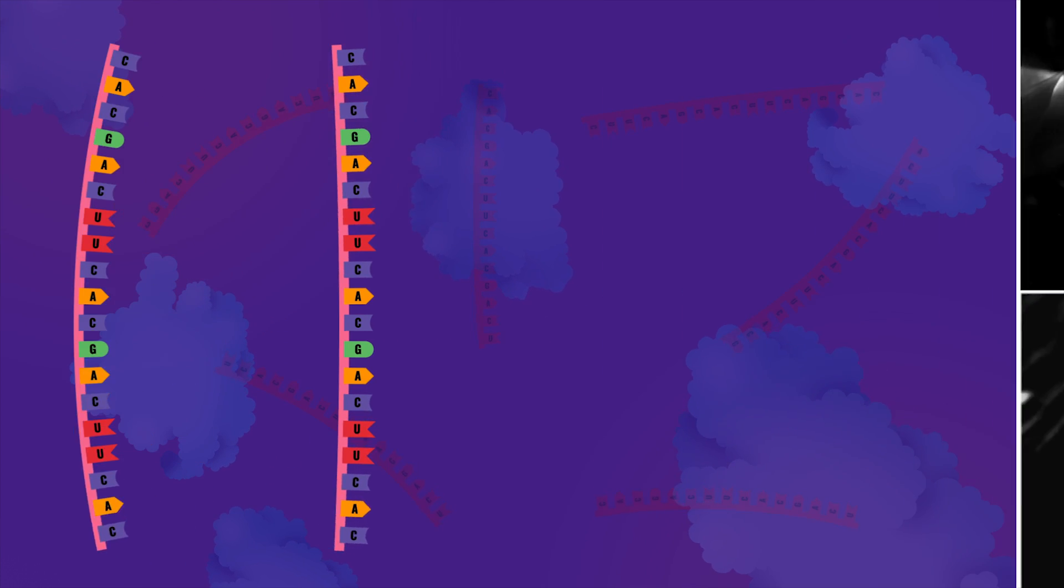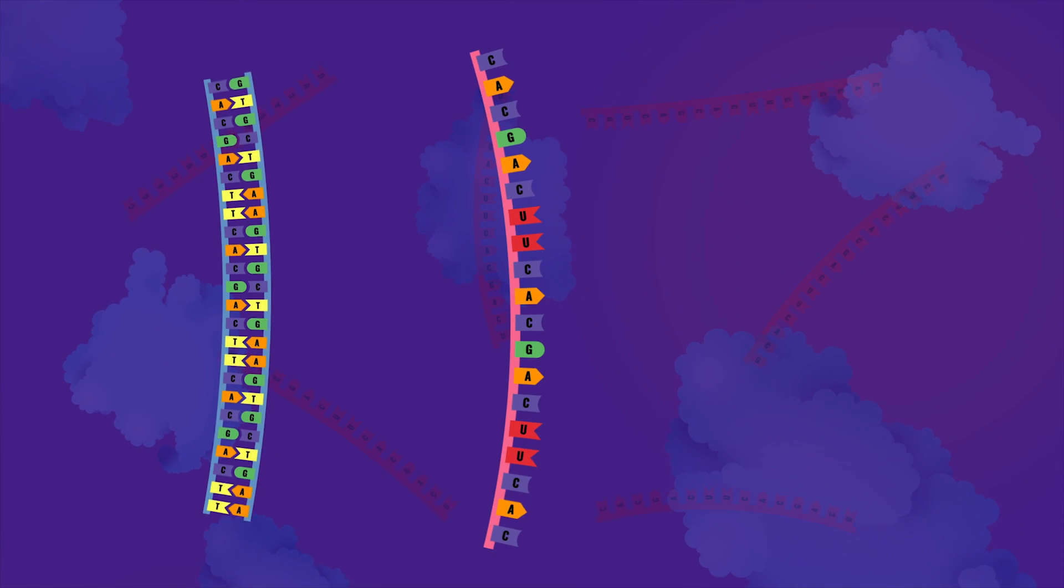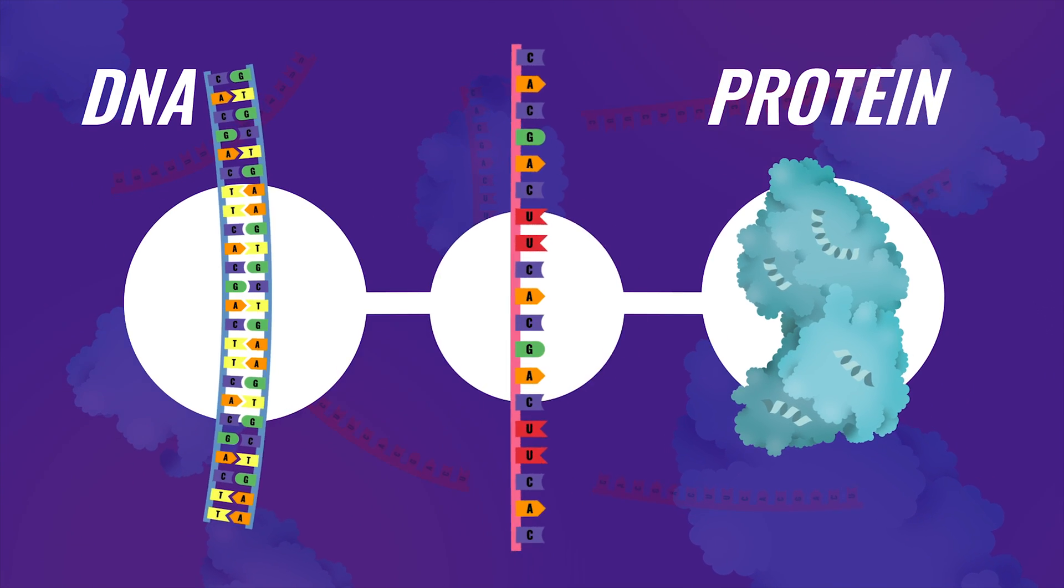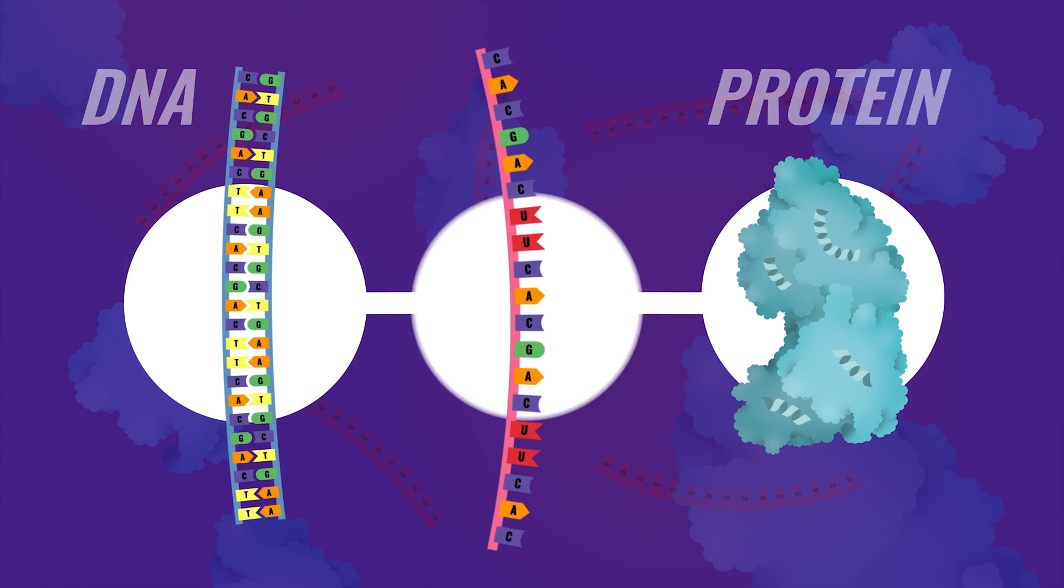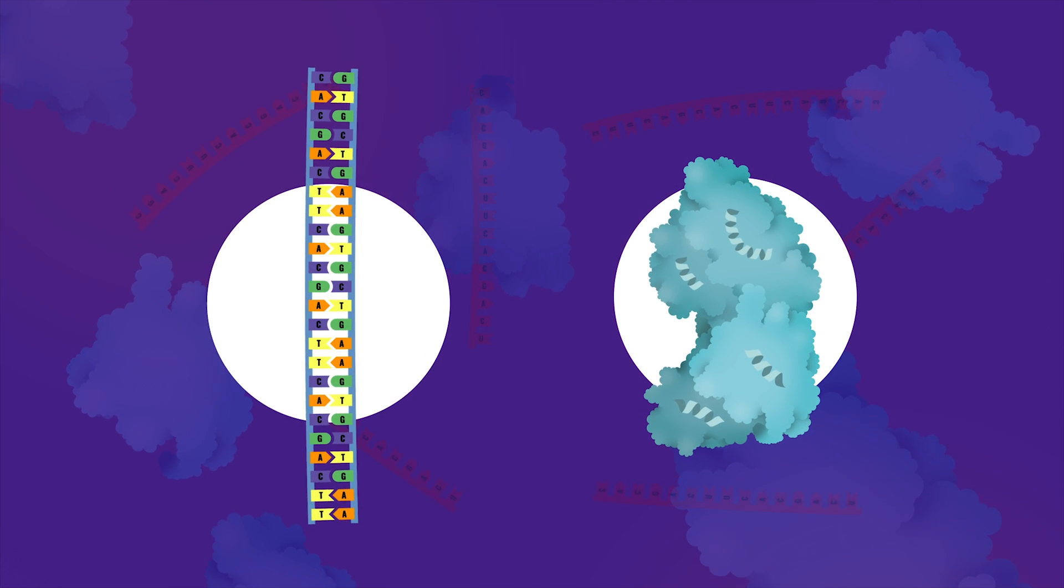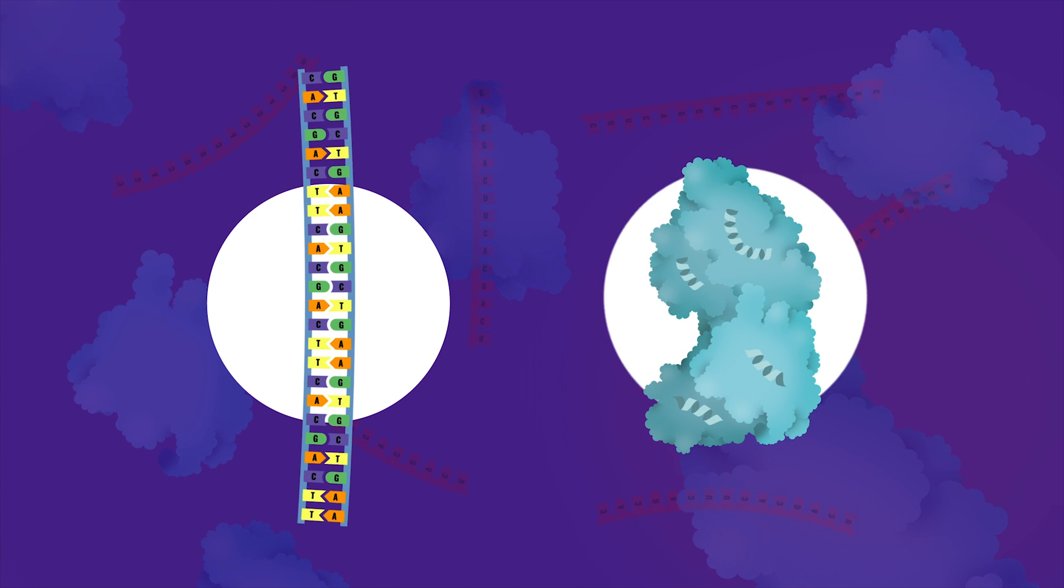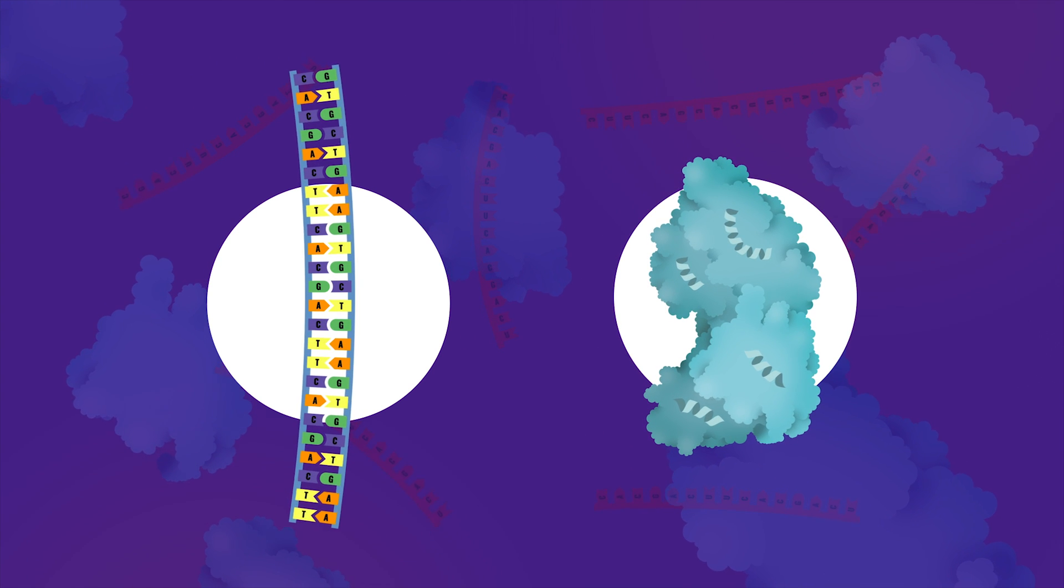RNA may have been the starting point of life on Earth, and it may have initially taken the role of both DNA and proteins. Cells use DNA to store information, and they use proteins to carry out different functions of the cell,